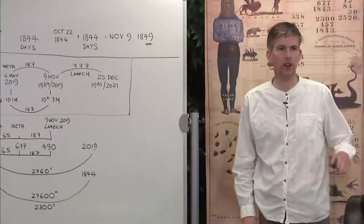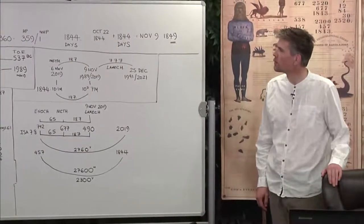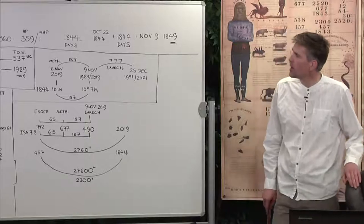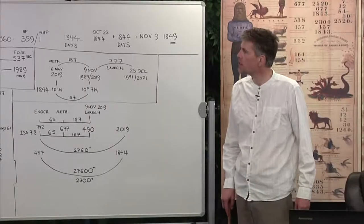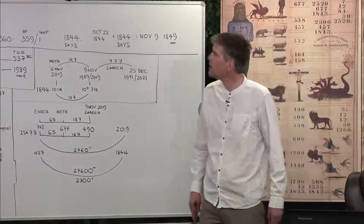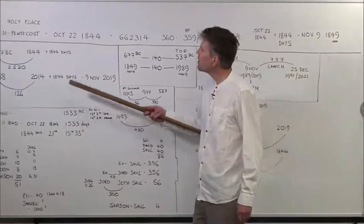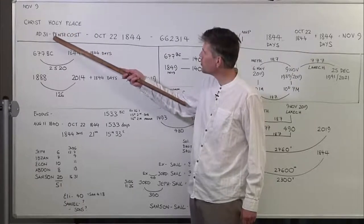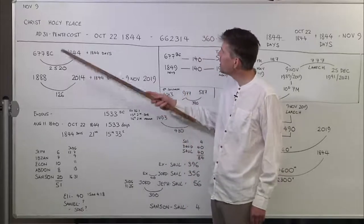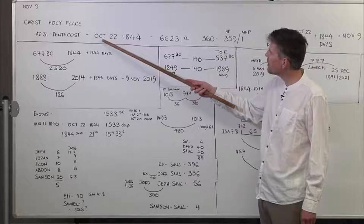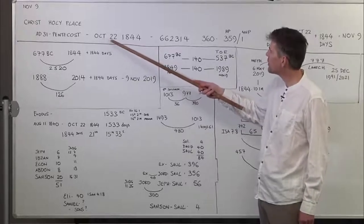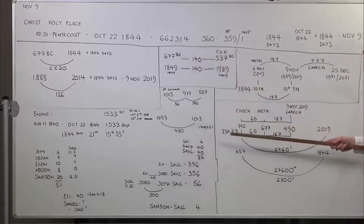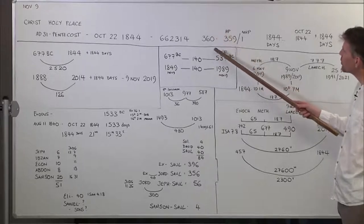That's a basic introduction. My first presentation dealt with November 9 in Millerite history. We could identify November 9 in that history as being a close of probation. I did a study where I found out how many days Christ was in the holy place. You can do this using online date calculators — from Pentecost in AD 31 to when he finished in the holy place and went into the most holy place on October 22nd, 1844. We can calculate it as 663,214 days.